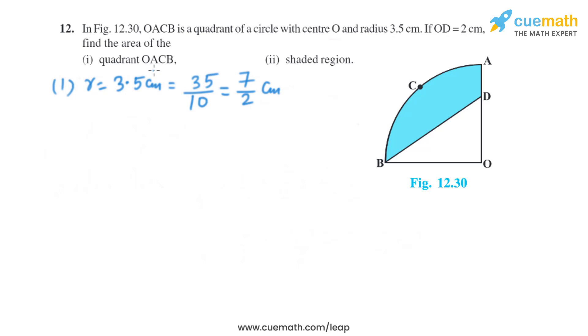Now let's find the area of quadrant OACB. We know the formula to find area of quadrant, that is 1 by 4 multiplied by pi R square, which is the same as 1 by 4 multiplied by 22 by 7 multiplied by 7 by 2 and multiplied by 7 by 2. On solving this, we will get the area of quadrant as 77 divided by 8 square centimeter.